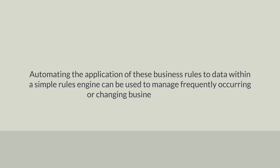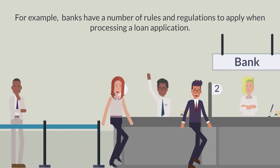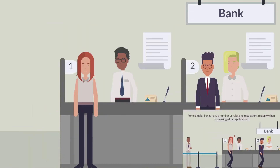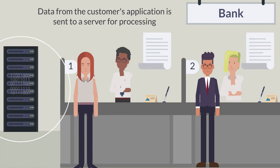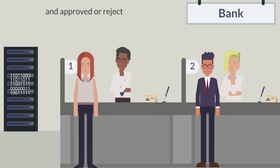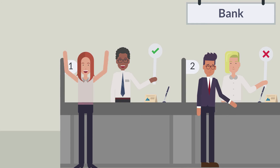You can automate and govern decision-making with a central decision-making software. For example, an employee at a bank has numerous rules to comply with when deciding to accept or reject a loan application. But by using Decision Manager, the employee can send the customer's data to the server for processing. The application will then be processed and returned, approved or rejected, based on pre-defined business rules. The bank employee can now approve or reject the application much quicker and in greater confidence than if they had manually reviewed the application.